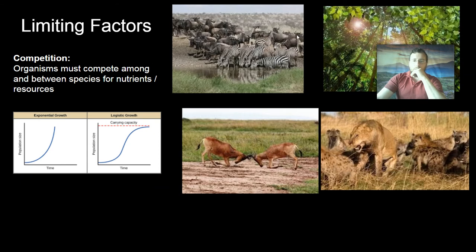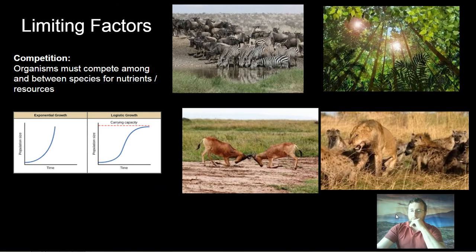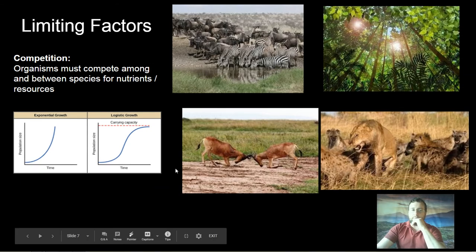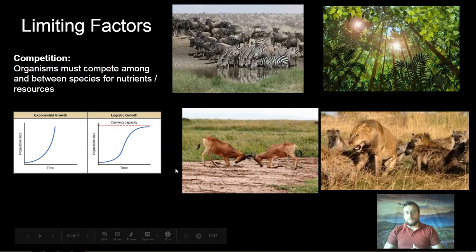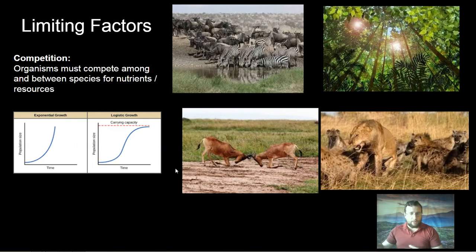The limiting factor we're going to be talking about in this video is competition — the idea that organisms must compete among themselves, and even between species too. It happens at the community level, but we talked more about that in the last video. Even within one species, they will compete for mates.